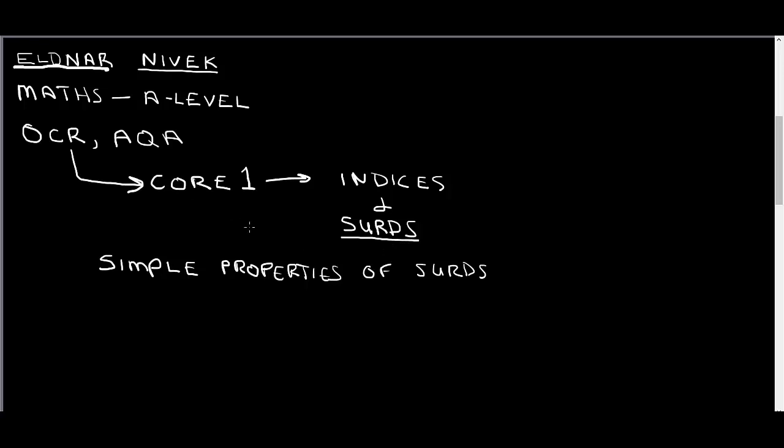Looking at the OCR, the first section is called Core 1 and it's on indices and surds. We're going to concentrate on surds.